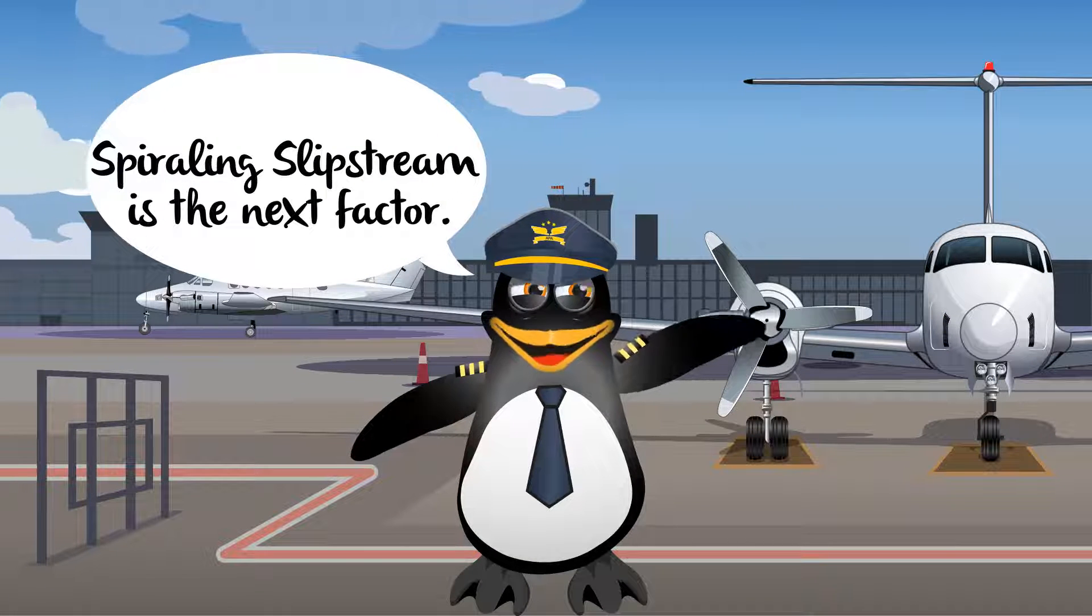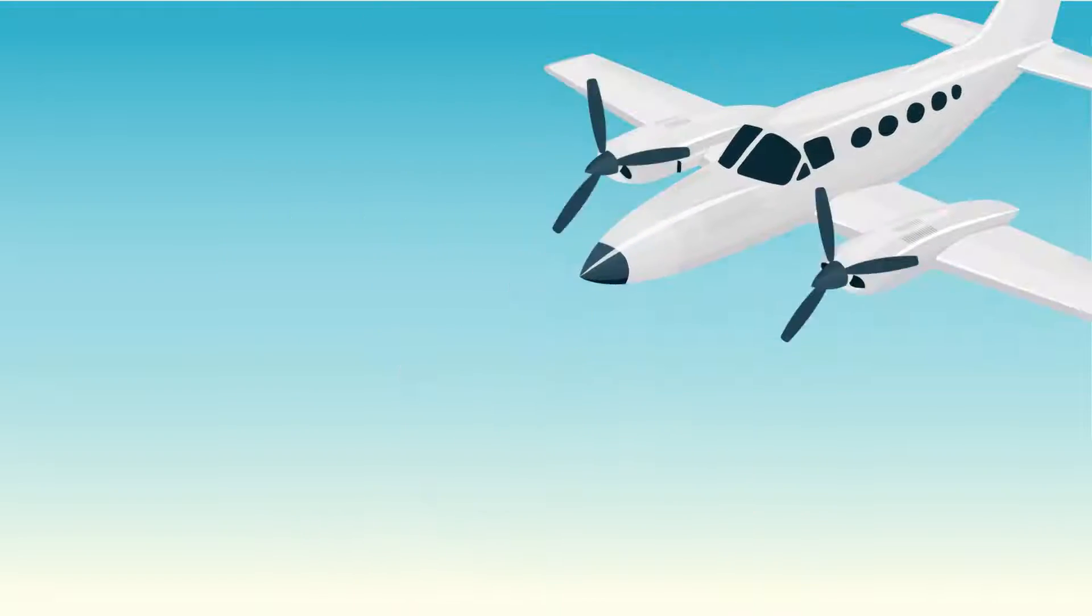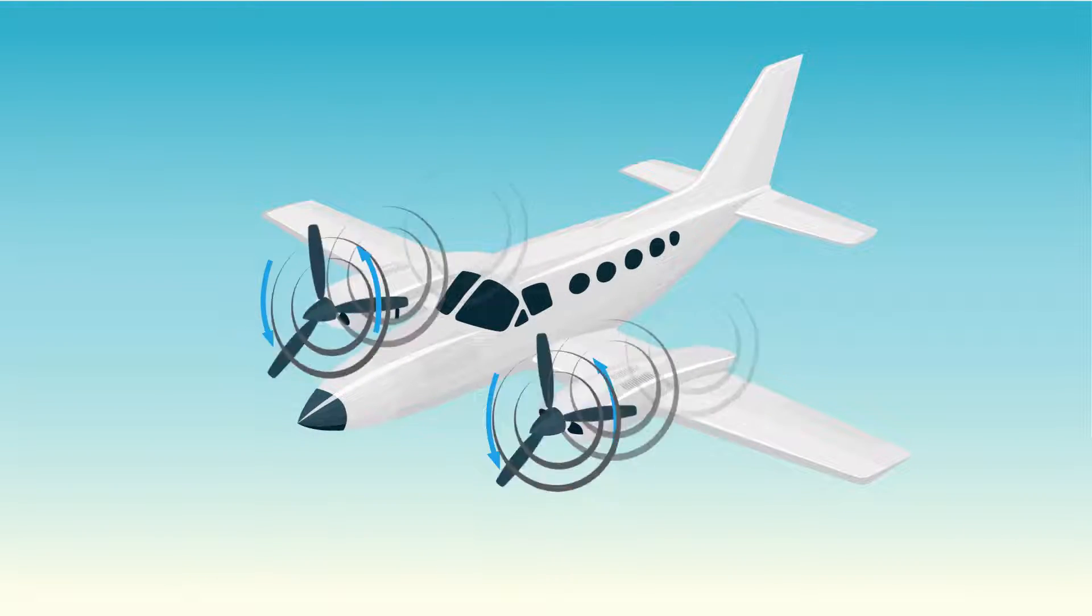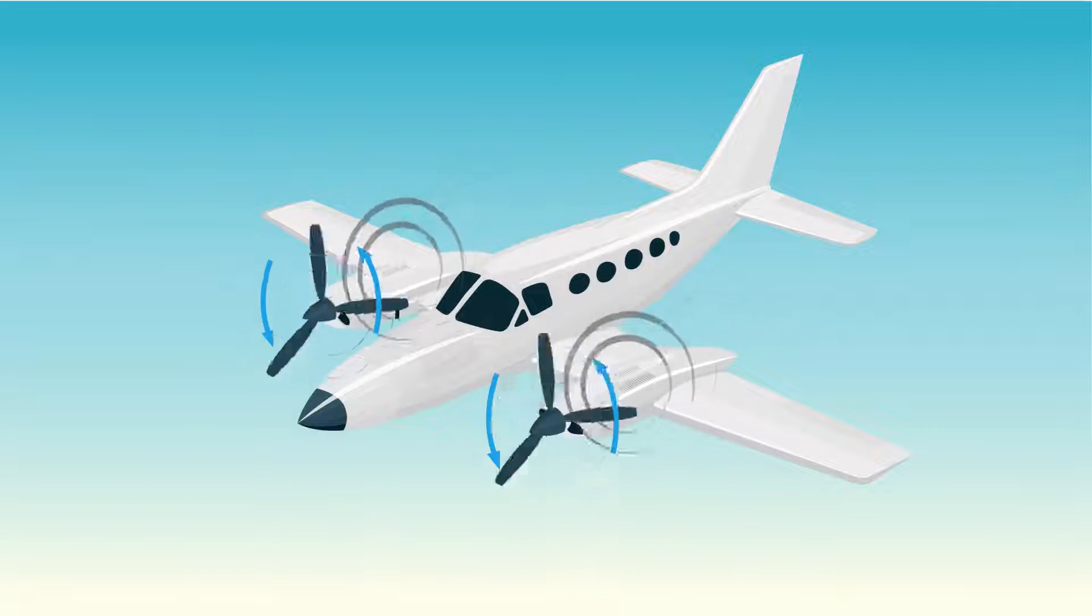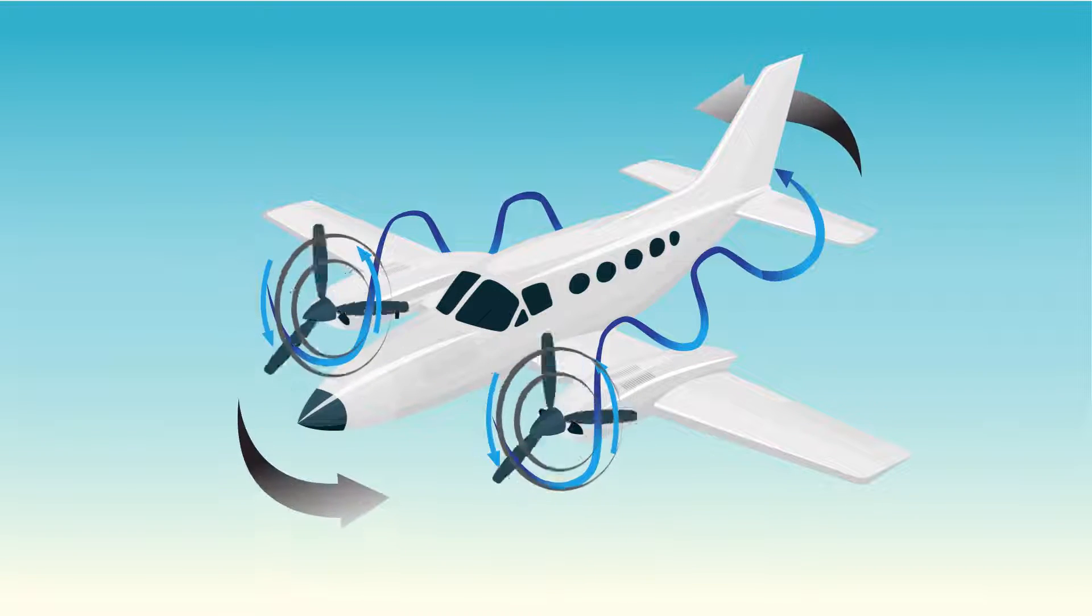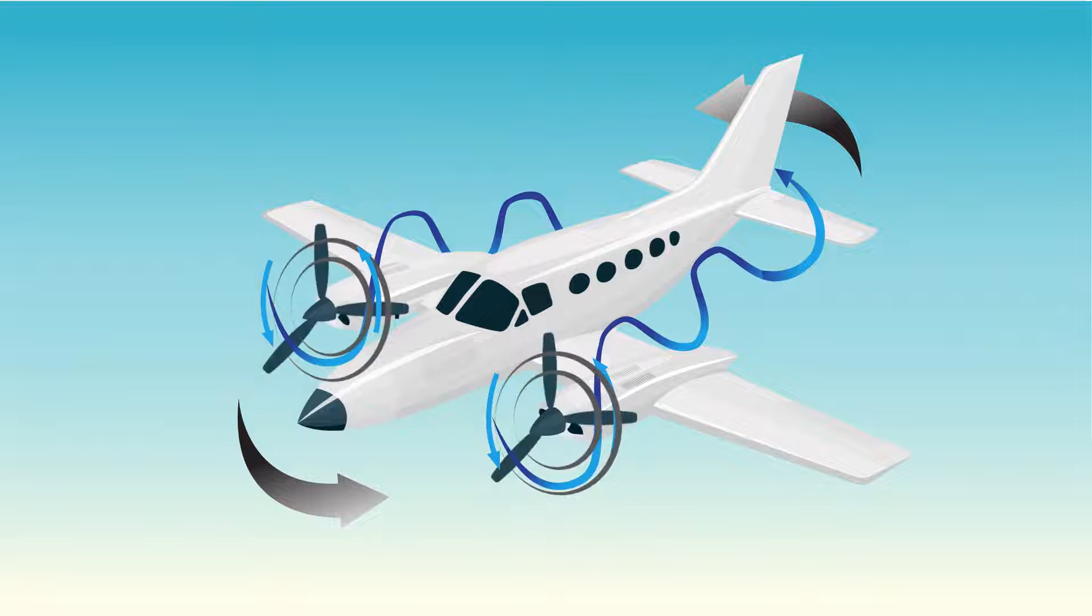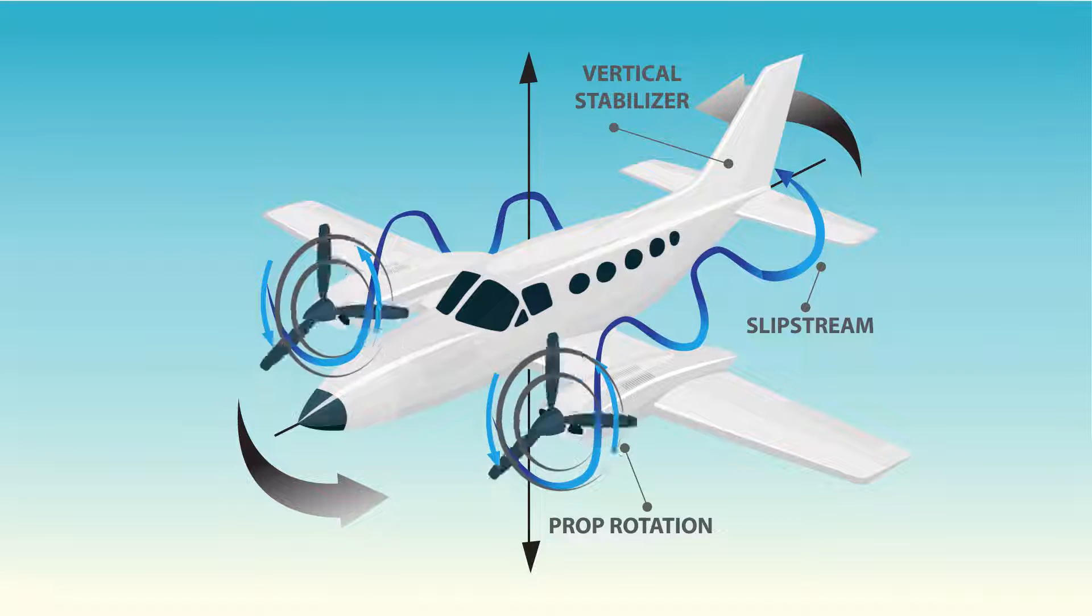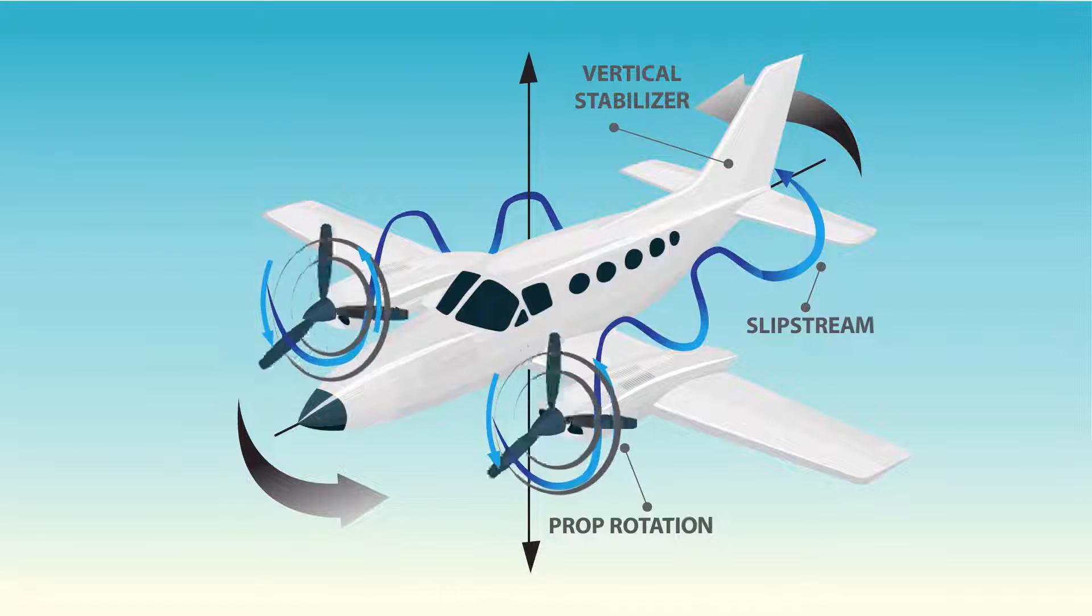Spiraling slipstream is the next factor. As a spinning propeller creates thrust, the air moving backwards will rotate in the direction of the propeller, spiraling rearward. The slipstream produced by the left propeller is displaced inward towards the fuselage. As the airflow moves back, it impacts the vertical stabilizer, enhancing vertical stability.